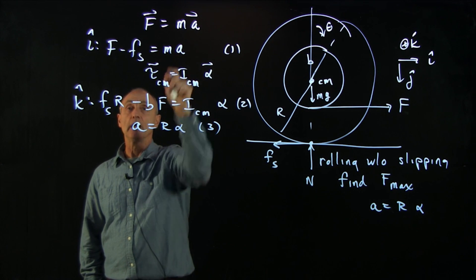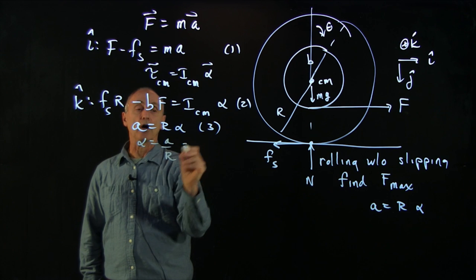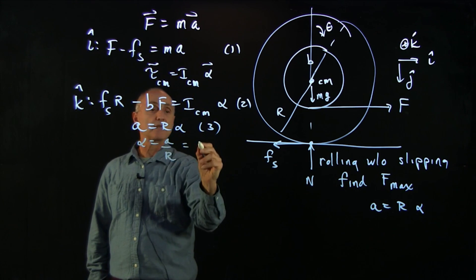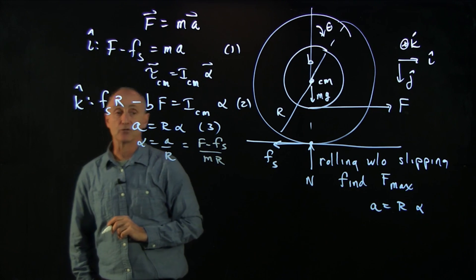And the way I'll do it is I'll write down from this condition alpha in terms of a over r. And from this equation, I have that alpha is a over r. And from the top equation, I have that a is f minus f static over m r times r.